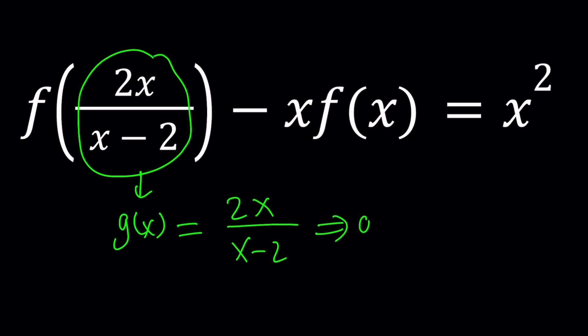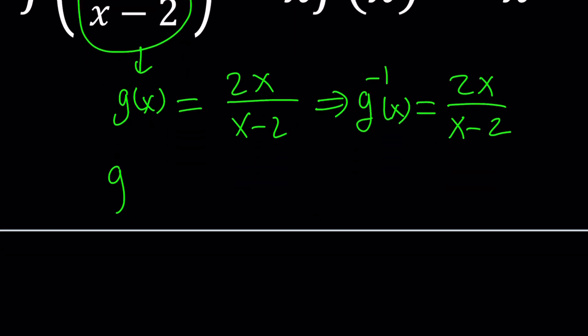And if you look at g inverse, the inverse of g, that'll be 2x over x minus 2, which means it's the same thing. What does that mean? It means if you compose g with itself, you're going to be composing g with its inverse, and that should give you the identity function.